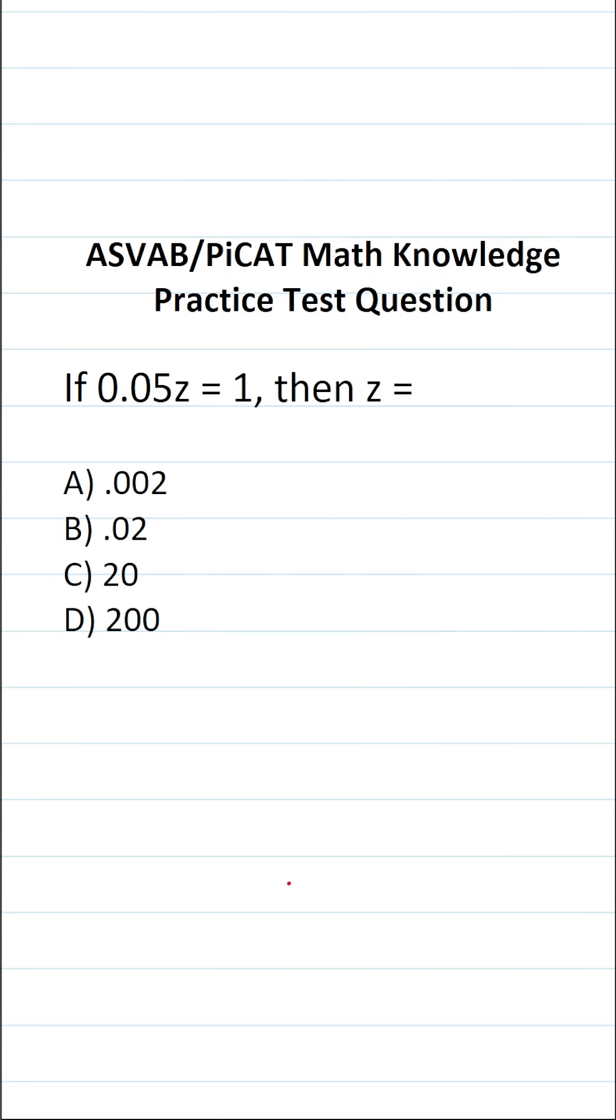This math knowledge practice test question for the ASVAB and PiCAT says, if 0.05z equals 1, then z equals.